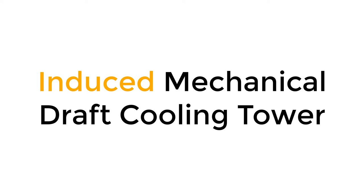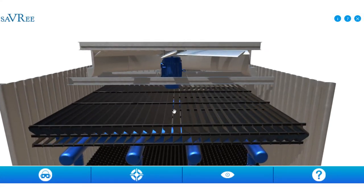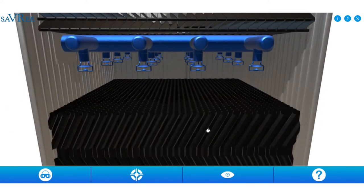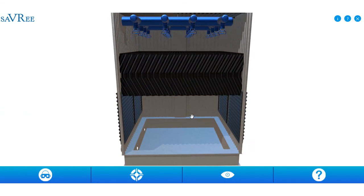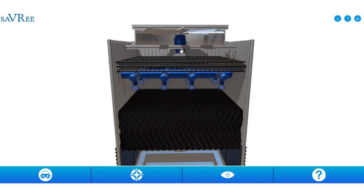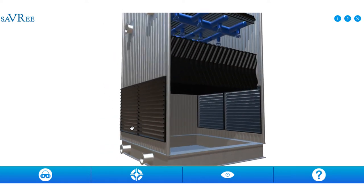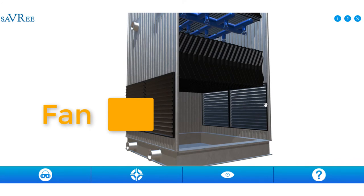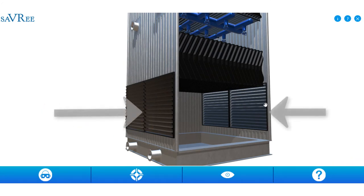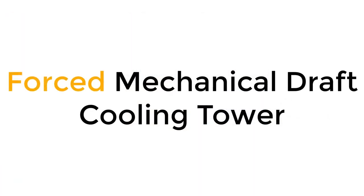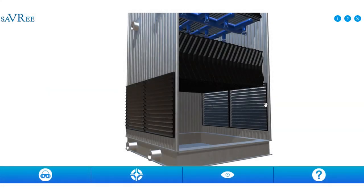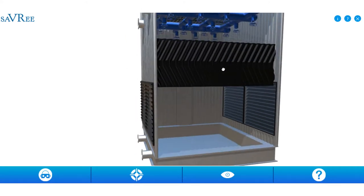When we say induced, we mean we're inducing a movement of air on the back side of the fan, creating a negative pressure within the cooling tower. The air is drawn up through the bottom, through these grooves, up through the heat exchanger, through the nozzles, through the drift eliminator, and out the top. If the fan were at the bottom, blowing air in, that would be forced draft. Forced draft means you're forcing air across the heat exchanger; induced draft means you're drawing air in across the heat exchanger and expelling it outwards.